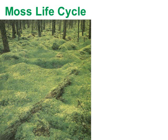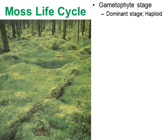Let's go into the life cycle of a moss. Here we have a pretty picture of a forest floor covered with moss. Whenever you see moss, what you're looking at is the gametophyte stage. Remember, plants alternate between gametophyte and sporophyte. With moss, what you almost always see is the gametophyte stage — it's the dominant stage. They spend the majority of their cycle in the gametophyte stage, which is the haploid stage.